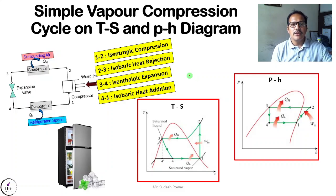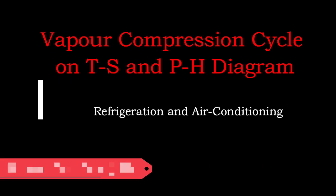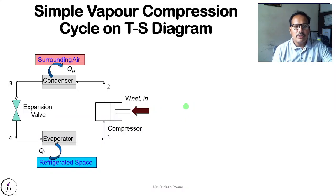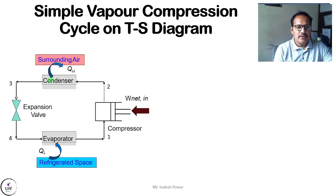In this video we are going to talk about the simple vapor compression cycle on a TS diagram and PH diagram. The simple vapor compression cycle has four important components: first is the compressor, second is the condenser, third is the expansion valve, and fourth is the evaporator.